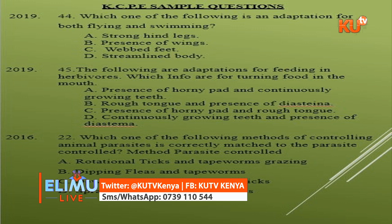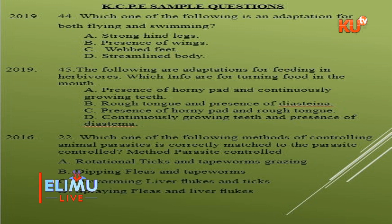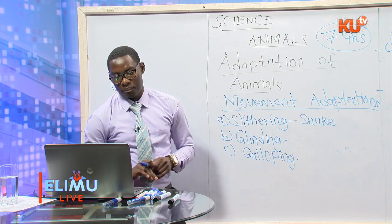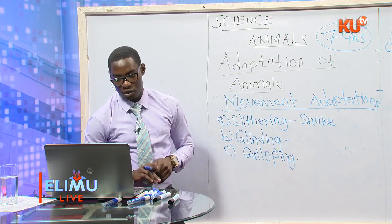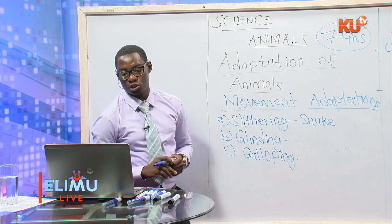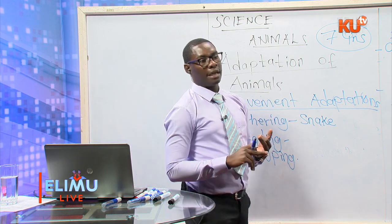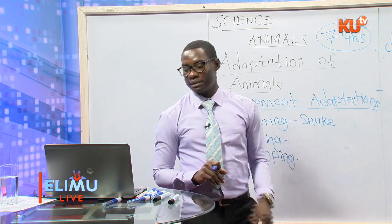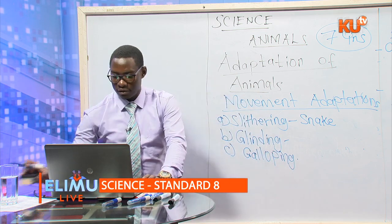KCPE sample question 2019, number 44: Which of the following is an adaptation to both flying and swimming? The best answer is streamlined body. Strong hind legs is an adaptation to hopping only; presence of wings is for flying only; webbed feet is for swimming only. But a streamlined body is an adaptation to both flying and swimming, and also to carnivorous animals moving fast.